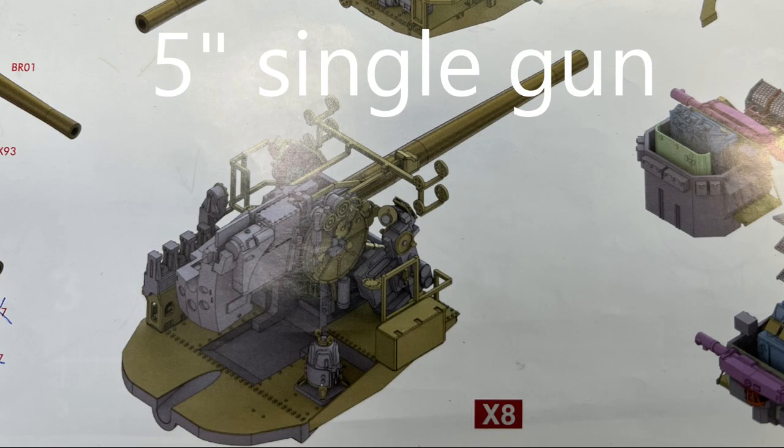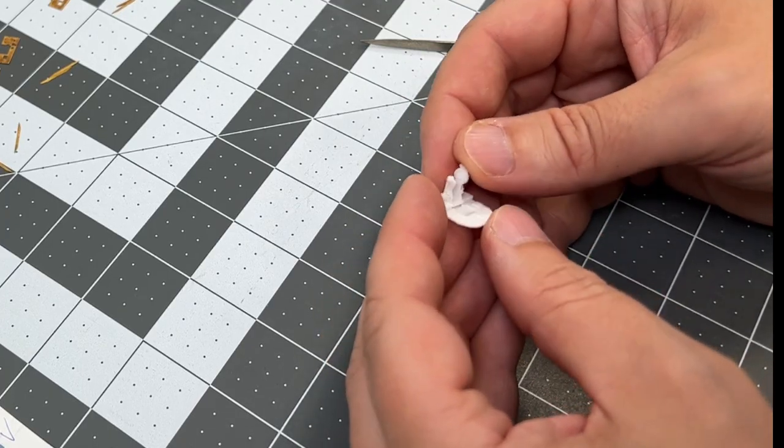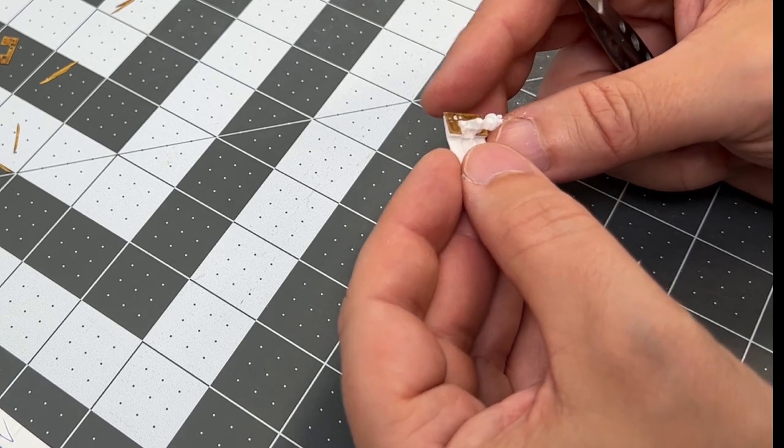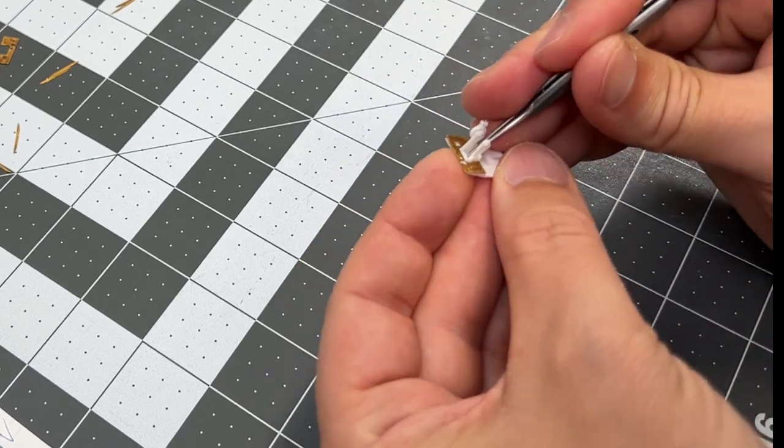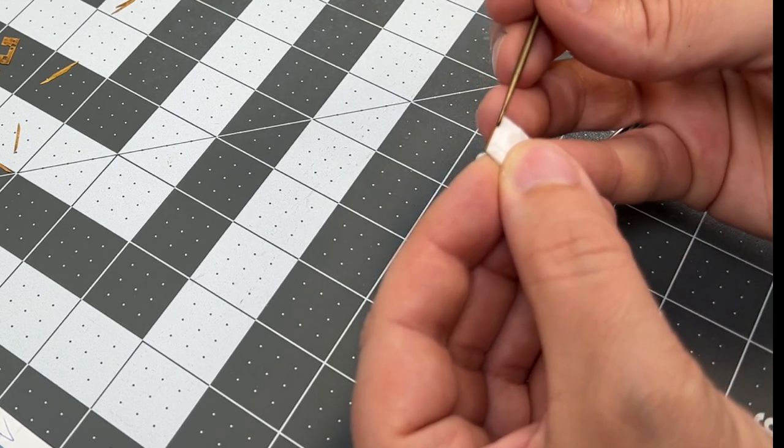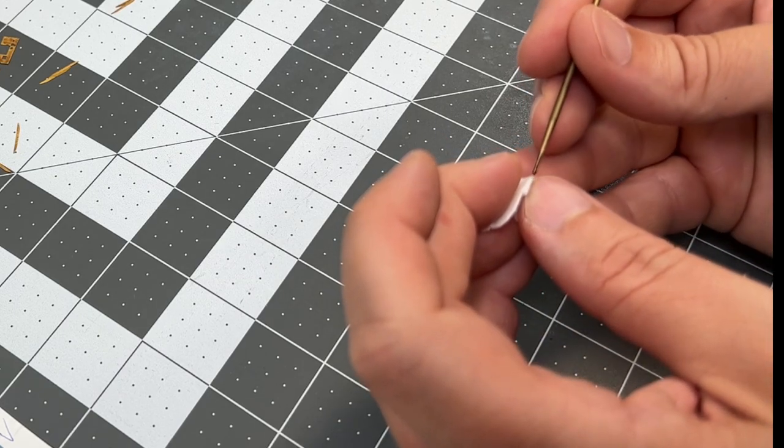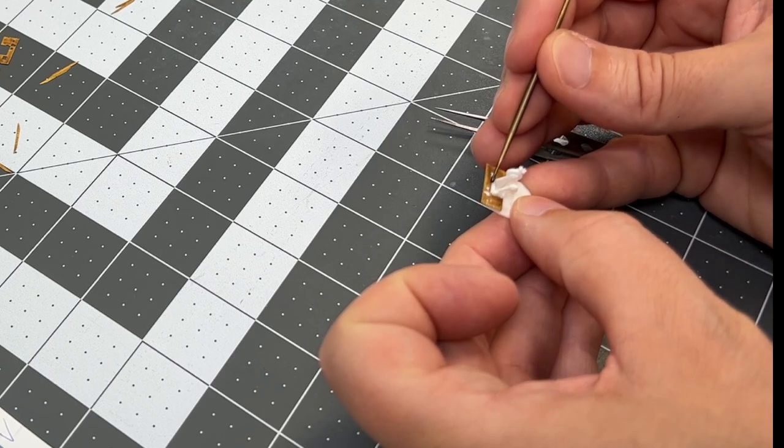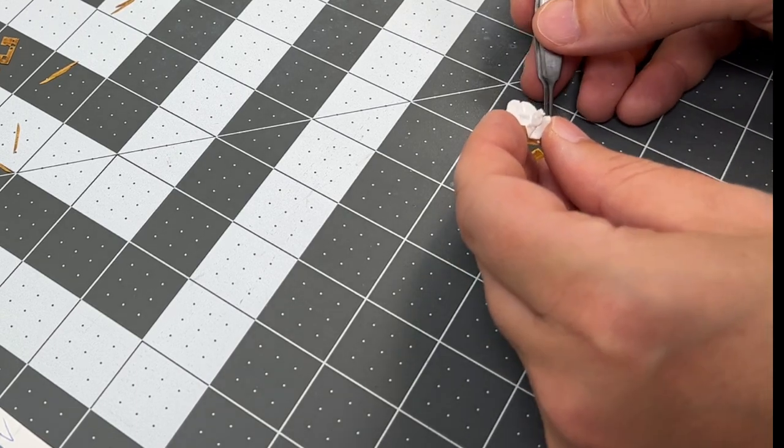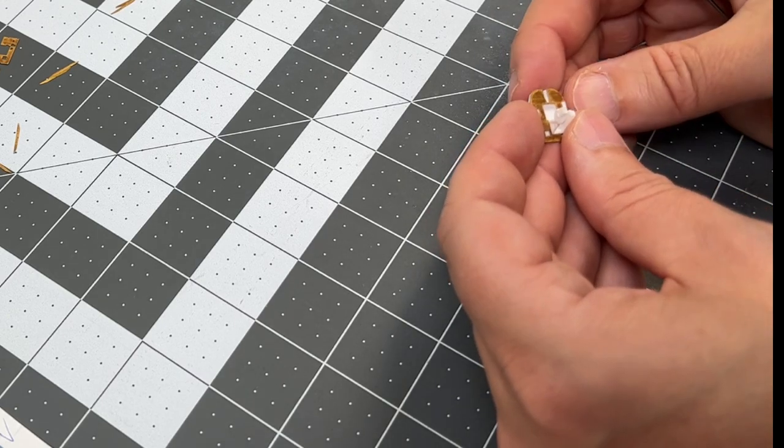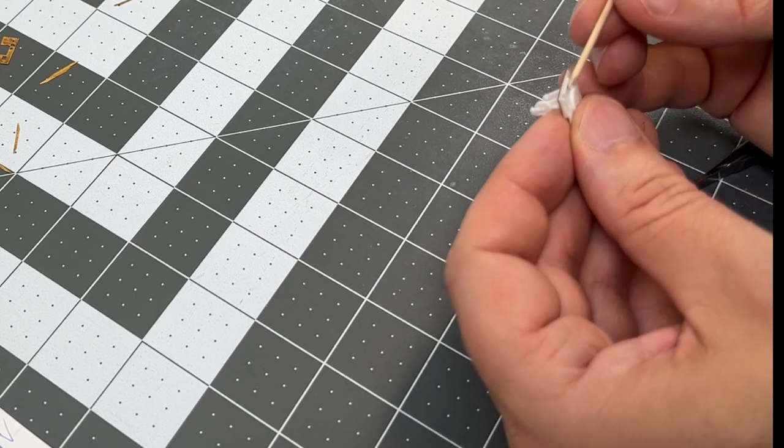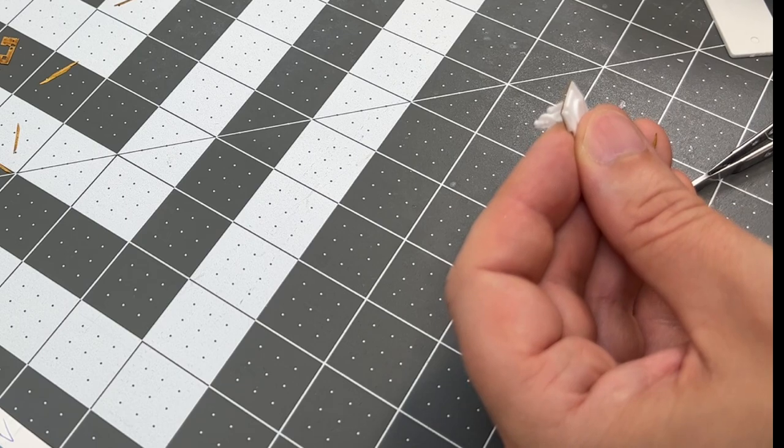First out is the five inch single gun, and this is the gun that has the most different parts of the different guns that you will be building if you're using the Pontos set. I selected to use the Pontos set. I have been trying to look at which armament was on the ship in '42 during Midway, and I haven't really found a good source for the different types and numbers. I hope that Pontos made their research well.